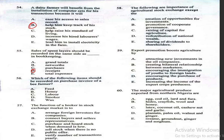Question 56: Which of the following items should be recorded on a purchase invoice of a bee farmer? A, feed; B, honey; C, label; D, smoker; E, wax. The correct answer is feed.